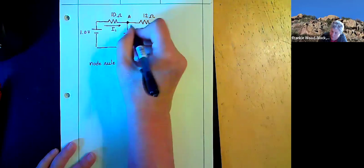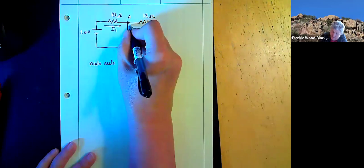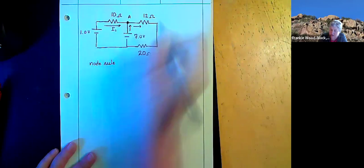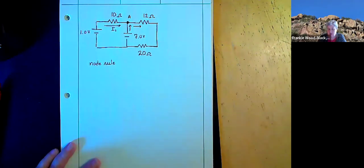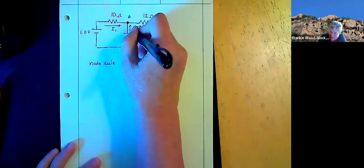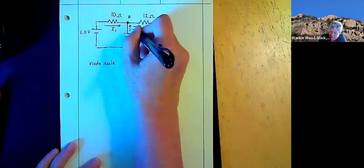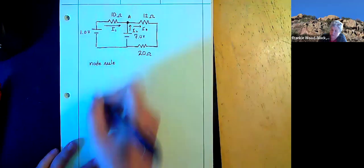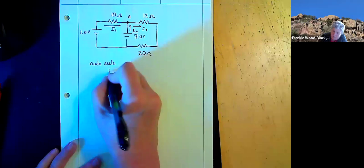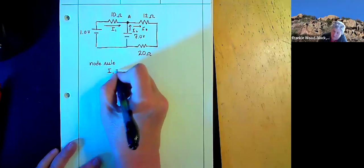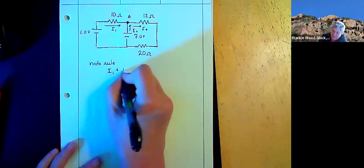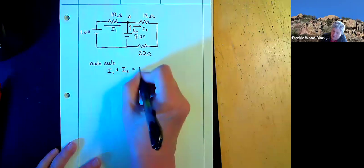And my node rule says that the currents that enter and exit my node have to equal. So I'm going to call this one I2 and I'm going to call this one I3. So in this case, I1 plus I2 is going to equal I3.